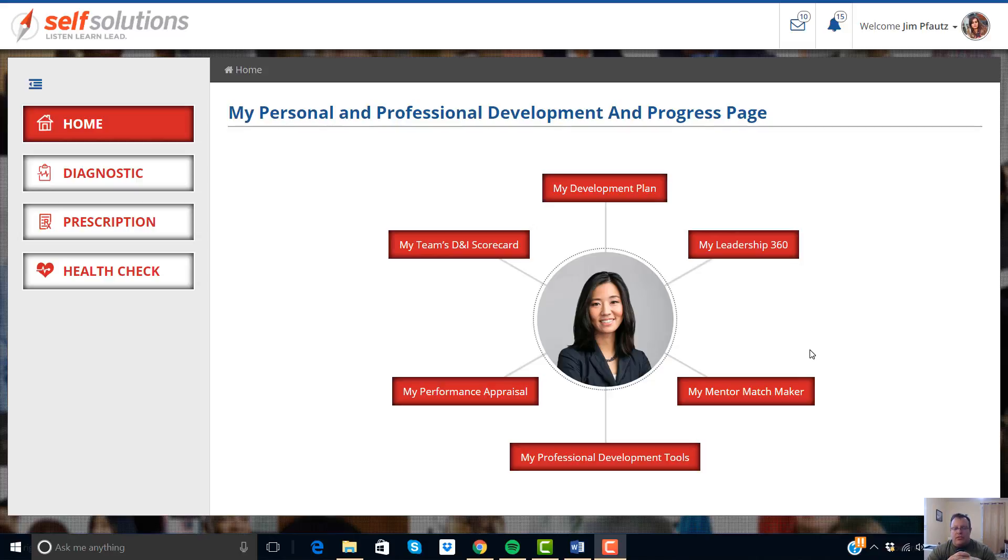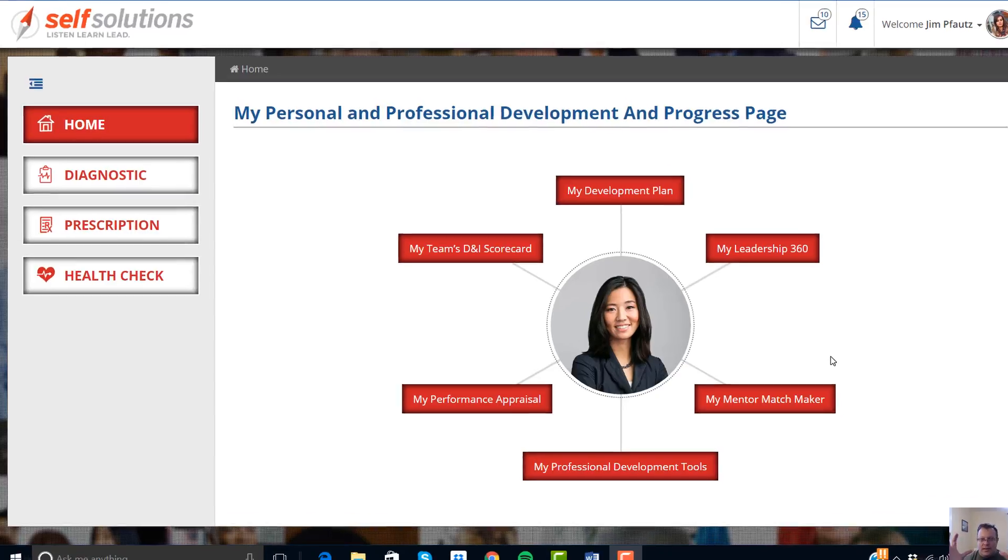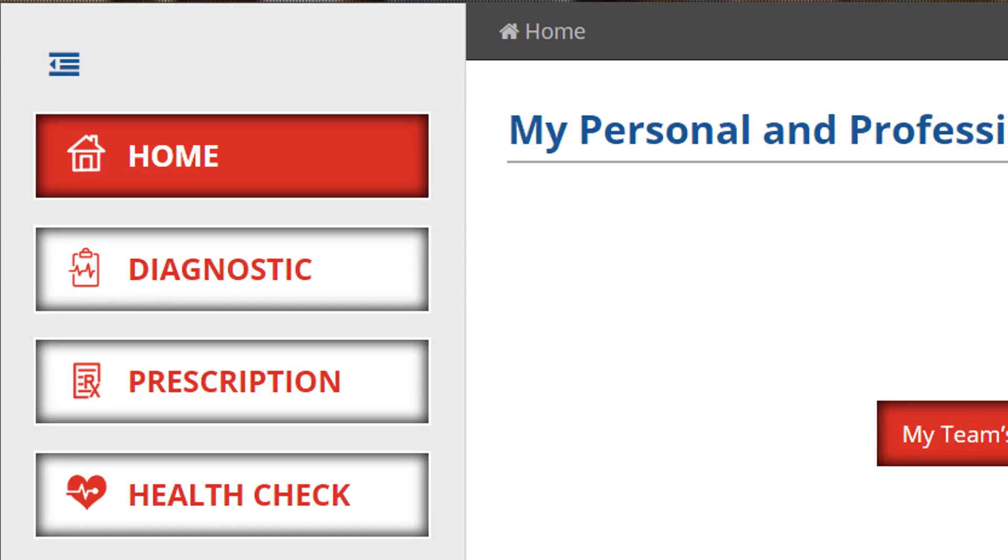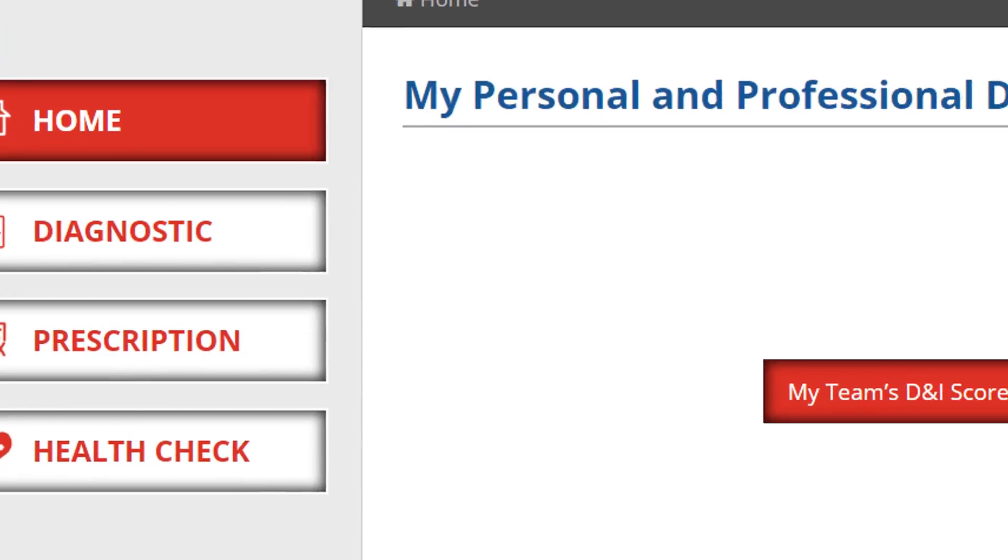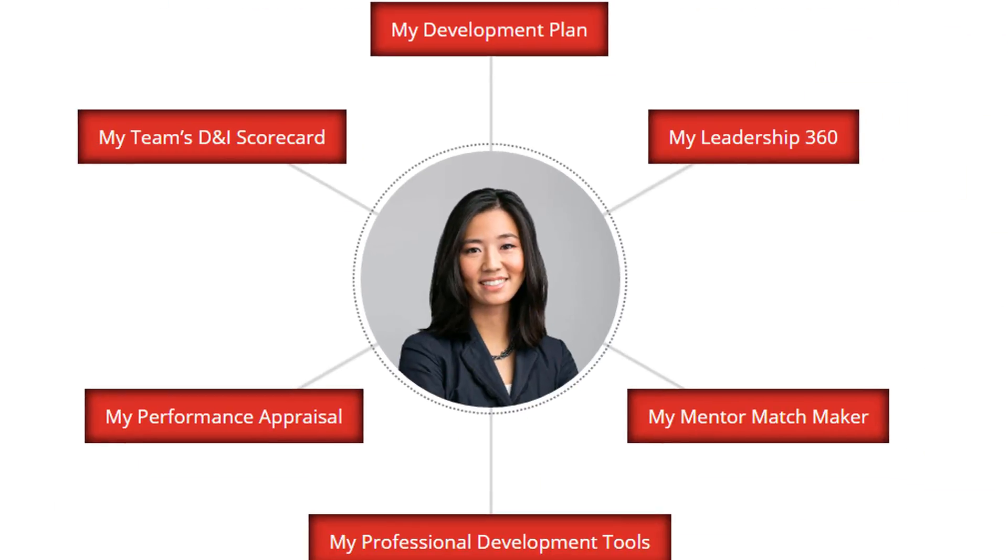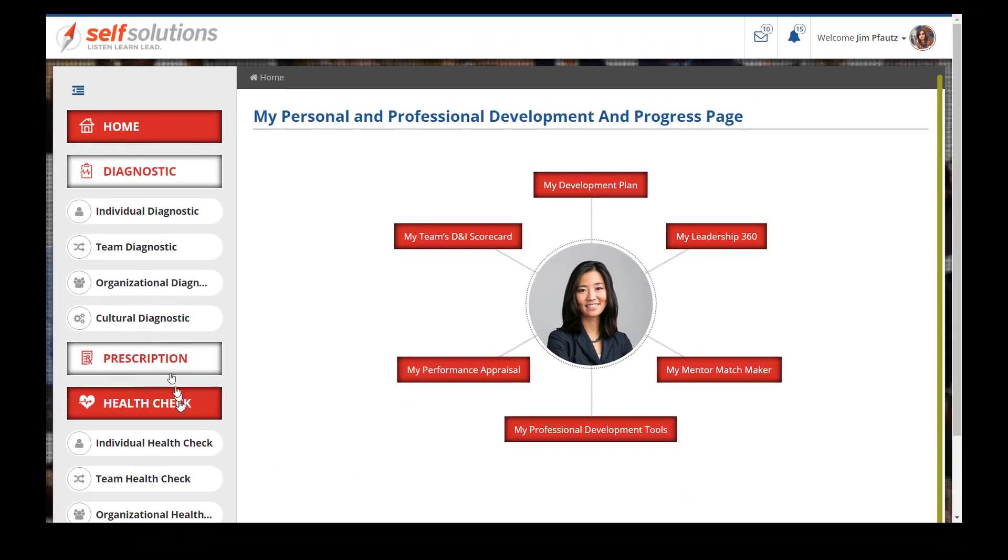Now, there's two aspects of the software. One is for the organization, the team, the group. The other is for the individuals. So if you look at our application the way we have it right now, the diagnostics and the health check, you see here where it says organizational diagnostic. That could be something like a customer satisfaction or an employee satisfaction survey. It could be an engagement survey.